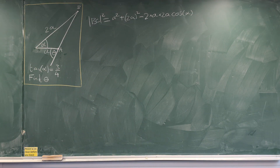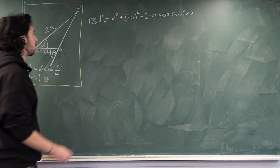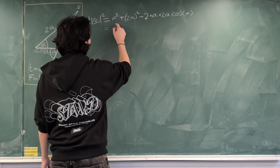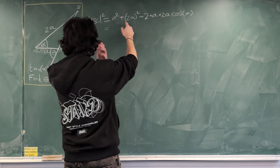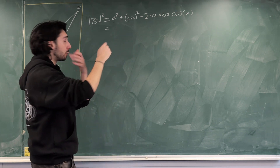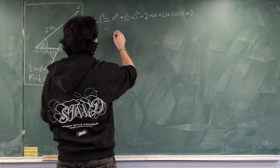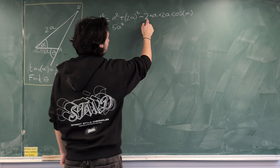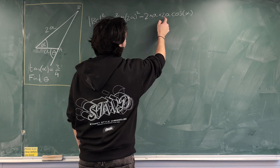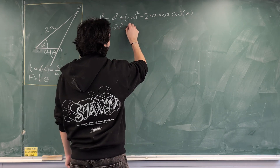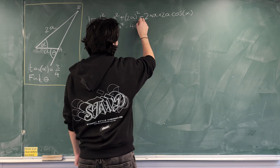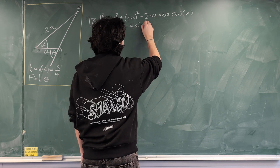We don't know cos alpha just yet, but we can simplify. We have a² plus (2a)² which is 4a², so a² + 4a² = 5a². And then 2 × a × 2a is 4a², so we have 5a² − 4a² cos alpha.